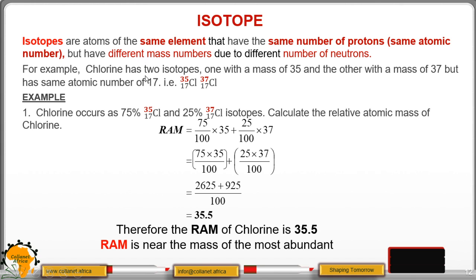For example, chlorine has two isotopes: one with a mass of 35 and the other with a mass of 37, but they have the same atomic number, 17. The first isotope is written with 35 as the mass number and 17 as the atomic number. The other isotope has 37 as the mass number and 17 as the atomic number. In the two isotopes, the number of neutrons are different, while the number of protons are equal at 17. Since the number of electrons equals the number of protons, the number of electrons is also 17.